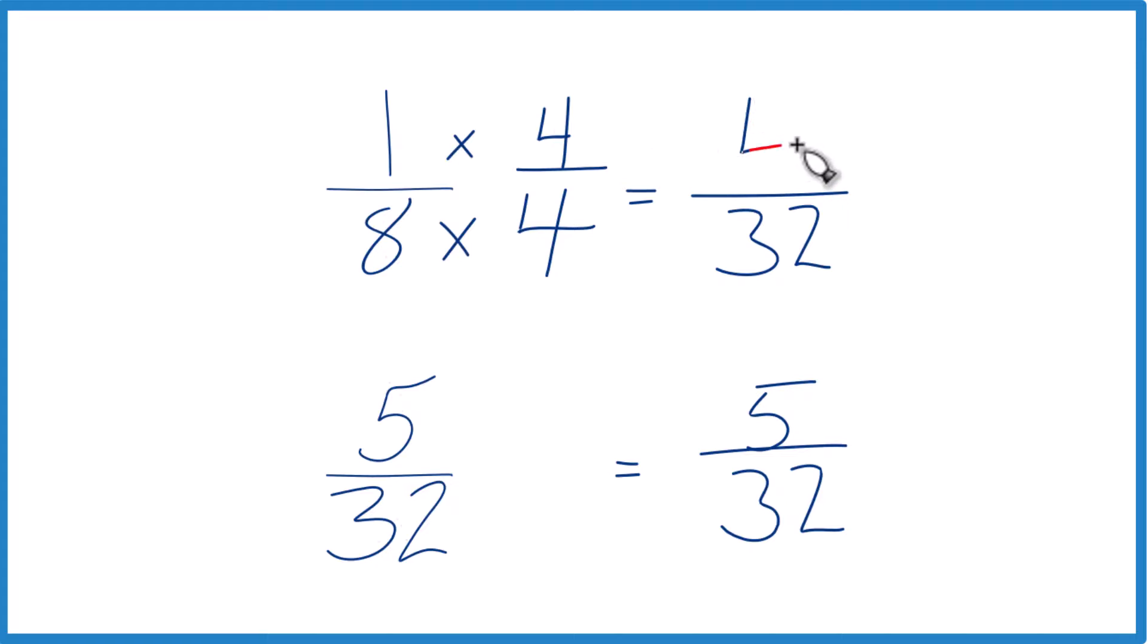1 times 4 is 4, and 4 32nds, that's an equivalent fraction to 1 8th has the same value.